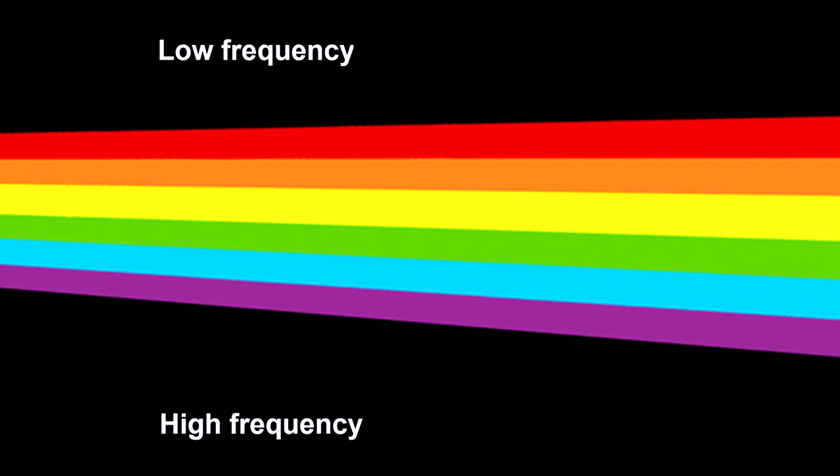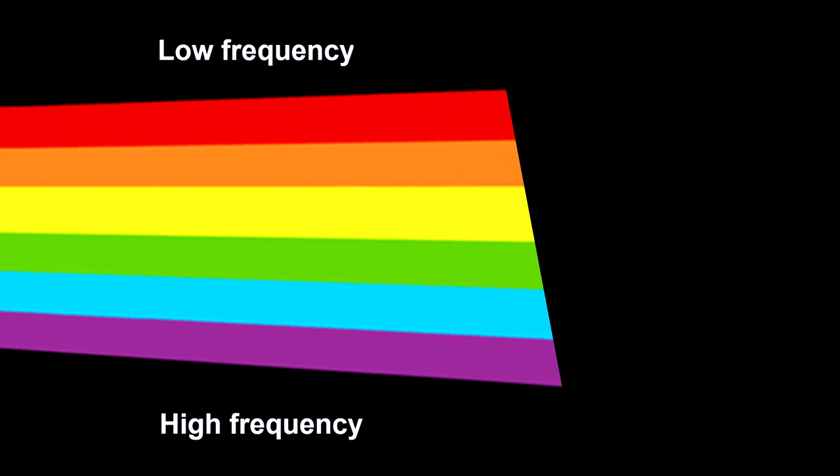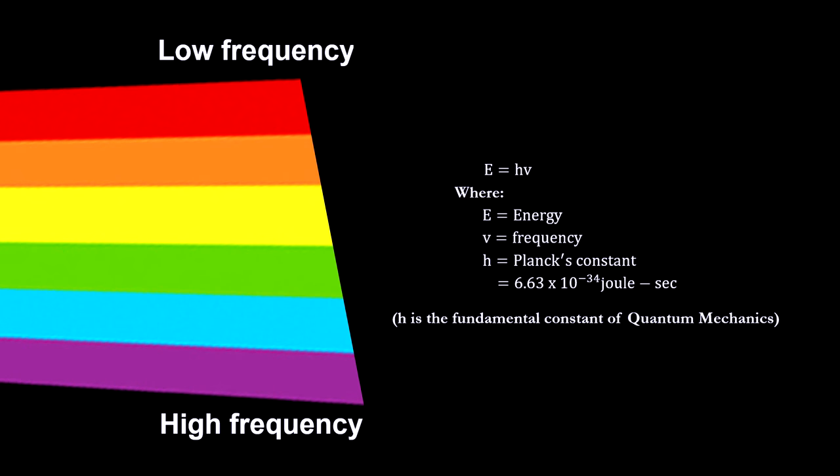This produces a spectrum of light with blue and violet at the high frequency end, and red at the low frequency end. An important relationship between energy and light is that a light's energy is directly proportional to the frequency. So when physicists see color, they think energy. Red is low energy light, and blue is high energy light.